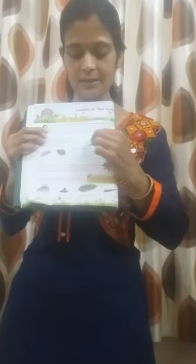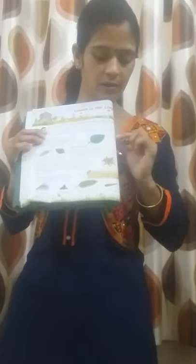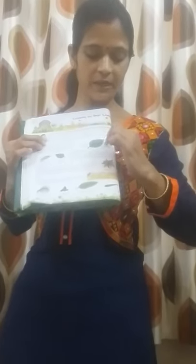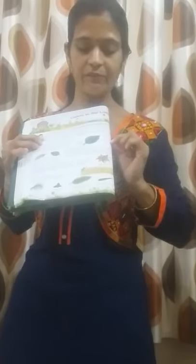Which lesson? Leaves in Our Lives. What is the topic we have read? What is the meaning of leaf diversity? Leaf parts, leaf stalk, leaf blade, main vein, middle side vein. We are learning this regularly.